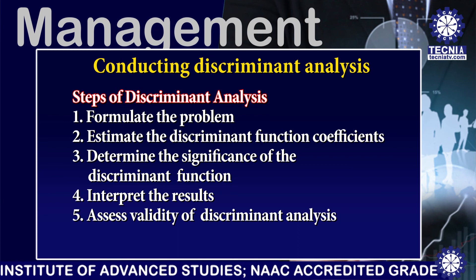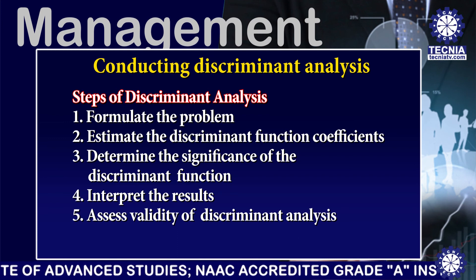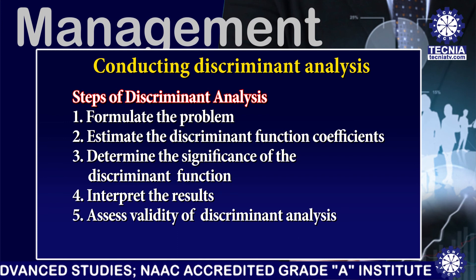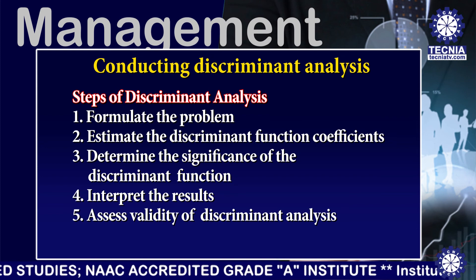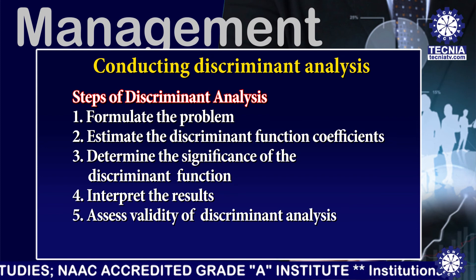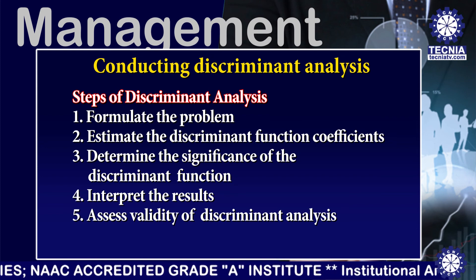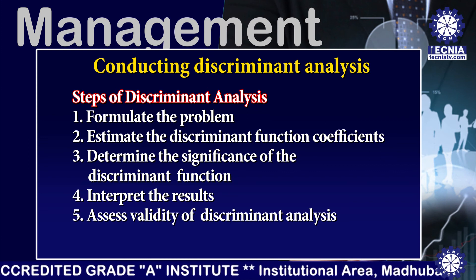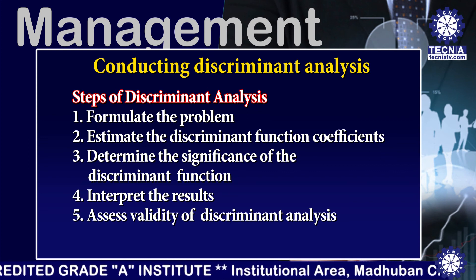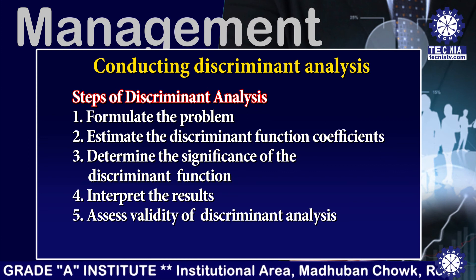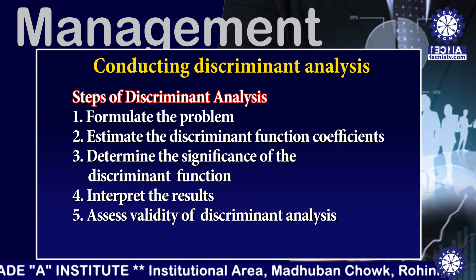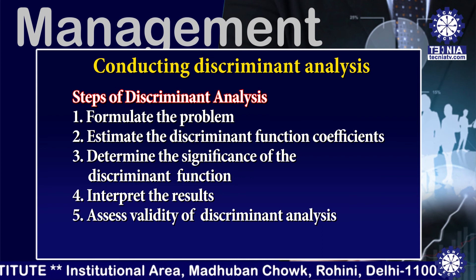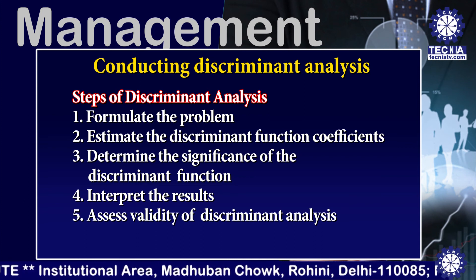The steps are: first, formulate the problem; second, estimate the discriminant function coefficients; third, determine the significance of the discriminant function; fourth, interpret the results; and fifth, assess the validity of discriminant analysis.